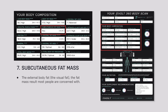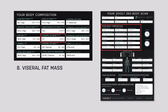Under body fat mass we have subcutaneous fat mass — that's the external body fat, the visual fat that most people are concerned with. We have a weight in kilos or pounds and a percentage in brackets on the right-hand side. Then we move to visceral fat mass, again in kilos or pounds first, and then the percentage on the right-hand side.